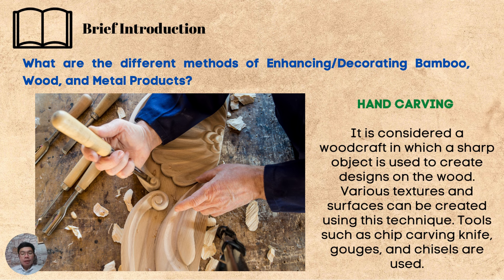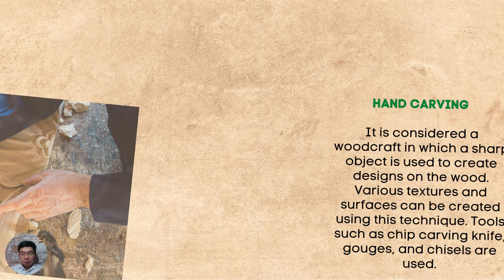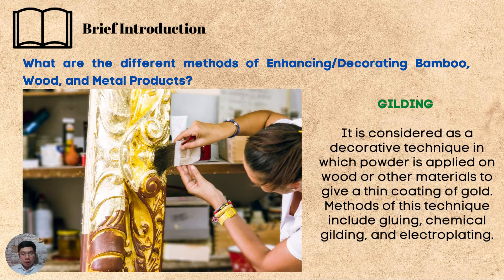Hand carving is considered a wood craft in which a sharp object is used to create designs on the wood. Various textures and surfaces can be created using this technique. Tools such as carving knife, gouges, and chisels are used — ito yung paglililok sa Tagalog, kids. We also have gilding — it is considered a decorative technique where powder is applied on wood and other materials to give a thin coating of gold. Methods of this technique include gluing, chemical gilding, and electroplating.